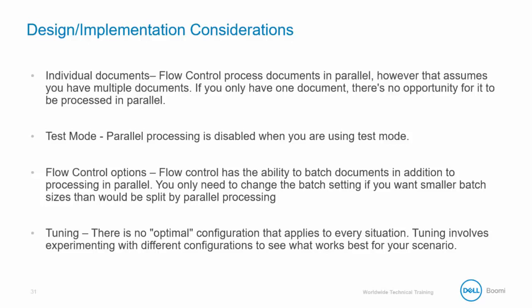You only need to change the batch setting if you want smaller batch sizes than would be split by parallel processing. In other words, if you have 10,000 documents and are processing across four threads, then the process will send batches of 2,500. If you want batches of 1,000, then set that value in the flow control shape and it will send three batches through each thread of 1,000, 1,000, and then 500.